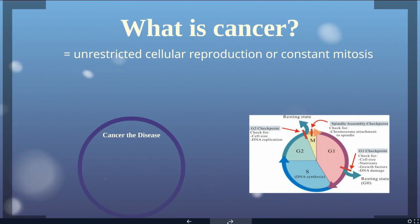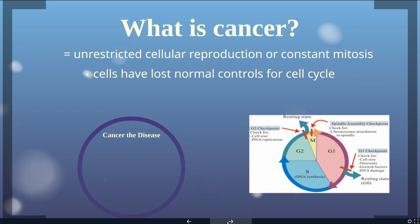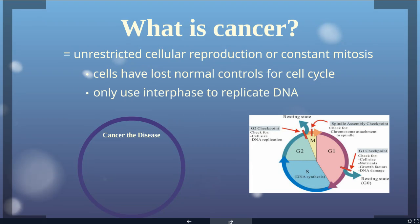So what is cancer? It is unrestricted cellular reproduction, or constant mitosis. It's your very own cells — not some pathogen that has affected your body. It's your own cells, but they've lost the normal cell cycle controls and are only going to use interphase to replicate their DNA.